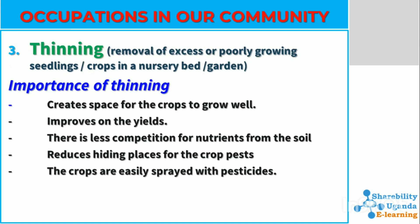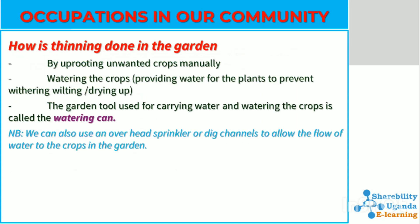Thinning is another method of caring for our root crops. Thinning is the removal of excess or poorly growing seedlings in a nursery bed or garden. It helps to create space for the crops to grow well and also helps to improve on yields. Thinning is done by uprooting unwanted crops manually.